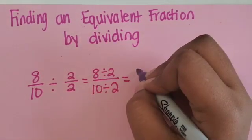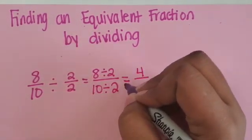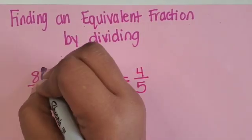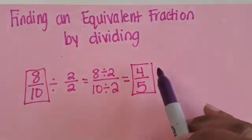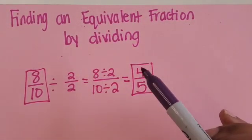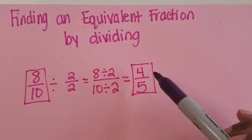8 divided by 2 is 4 and 10 divided by 2 is 5. So 8/10 is equivalent to 4/5. So this is a fraction in simpler terms, in its simplest terms.